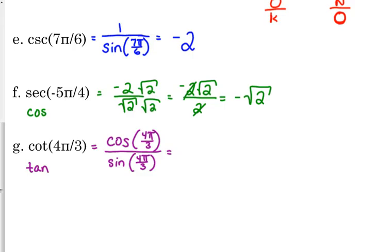So, 4π over 3. My over 3 angles cosine is 1 half, and 4 over 3 is a little bit greater than 1, so we're in the third quadrant, so both of these are negative, so that's negative 1 half over negative square root 3 over 2. And you can look at your unit circle there to make sure that I'm telling you the truth.